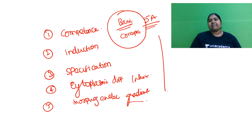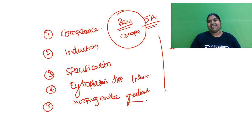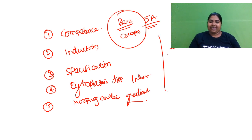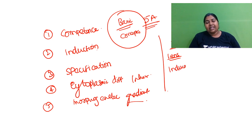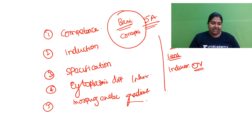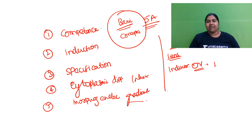Let's look at induction. Who is an inducer — who is going to give this signal? For lens development, the optical vesicle is going to serve as an inducer. So the optical vesicle tells the receiving tissue to develop into a lens.